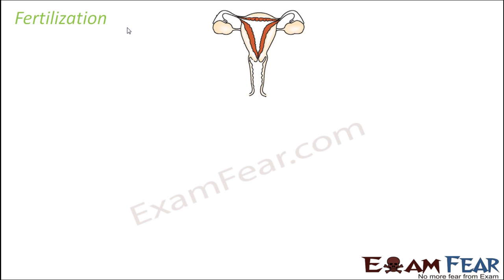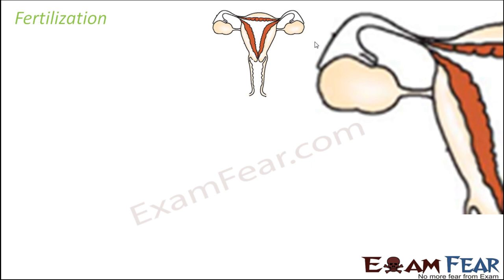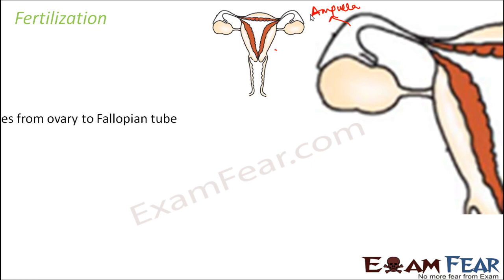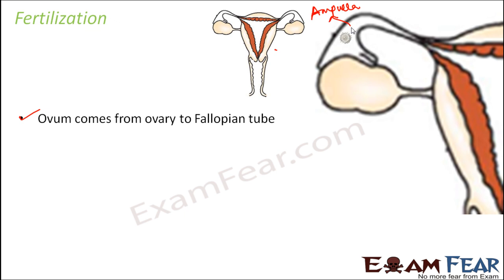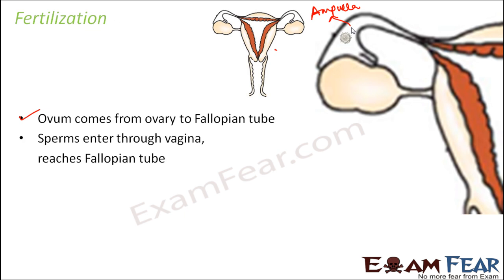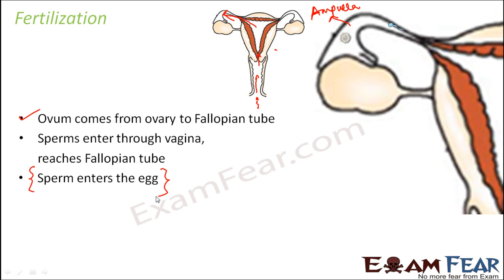Let us talk about fertilization in more detail. I have magnified the ampulla region because that is where the process of fertilization takes place. The ovum comes from the ovary to the fallopian tube by ovulation — the release of ovum from the ovary is ovulation. Once ovulated, it reaches the fallopian tube. The sperm enters through the vagina and reaches the fallopian tube, and then the sperm will enter the egg.